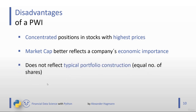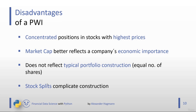Stock splits can also complicate the construction of a price-weighted index. For example, a stock priced at 1,000 could be split into two shares at 500 each, and this must be reflected in the index. For us this is not a problem, as the historical prices from Yahoo Finance already include the impact of stock splits.